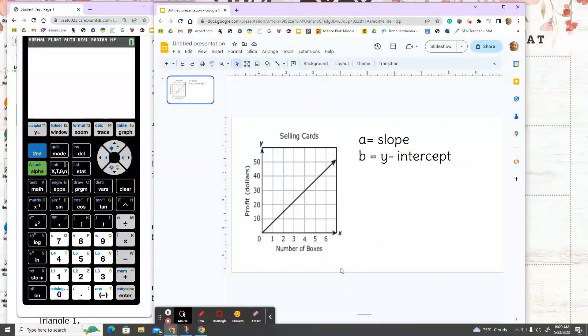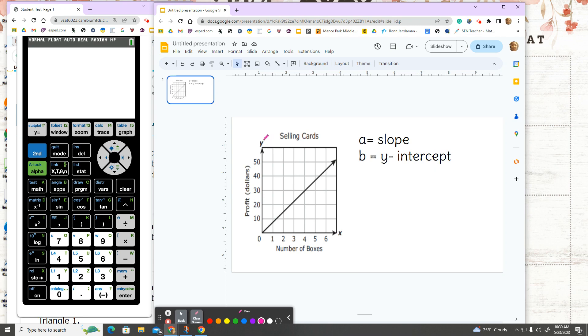Today we're going to find slope and y-intercept from a graph using two points. First, I want to make sure that my graph is labeled - that's my x and that's my y.